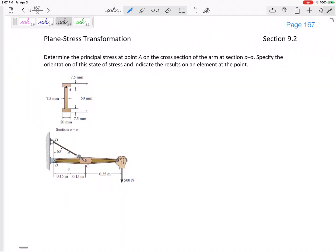Alright, so we're still talking about stress transformation and the stress at a different orientation. This one, we're going to skip over. It says to determine the principal stresses at point A at this cross-section AA.